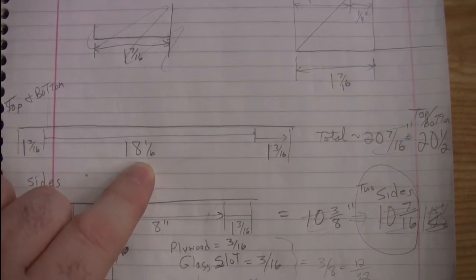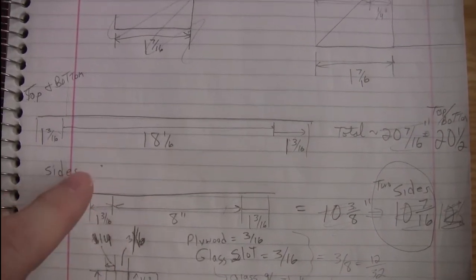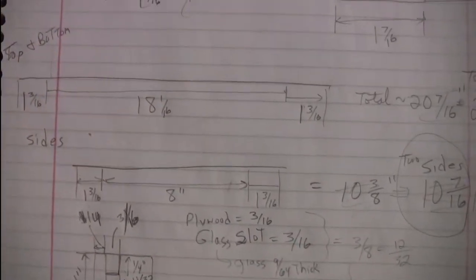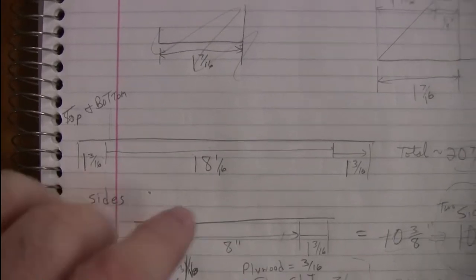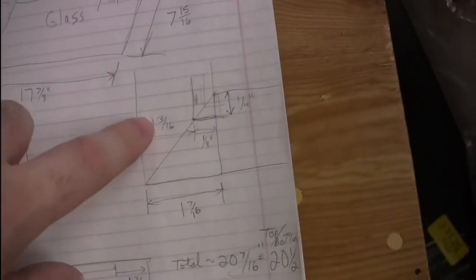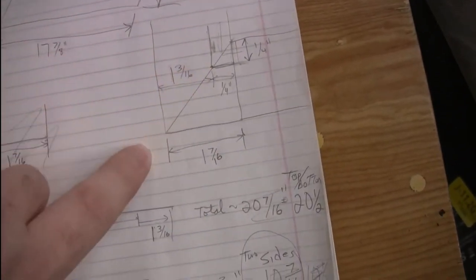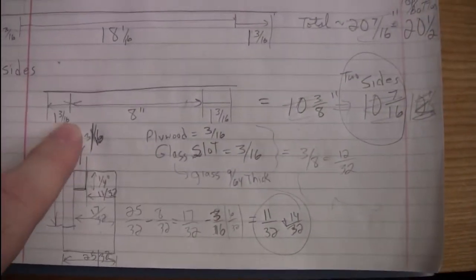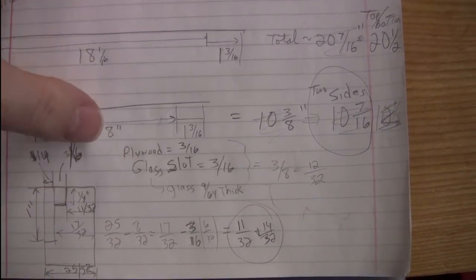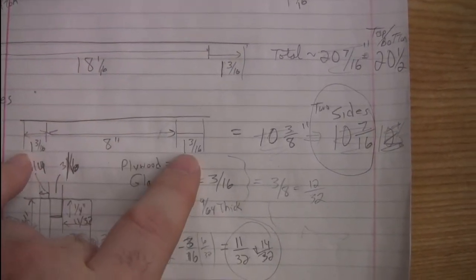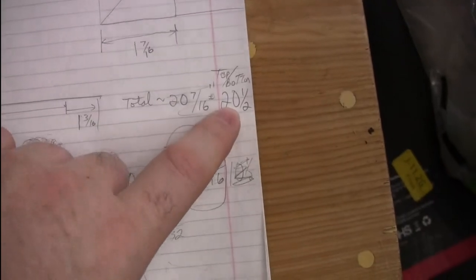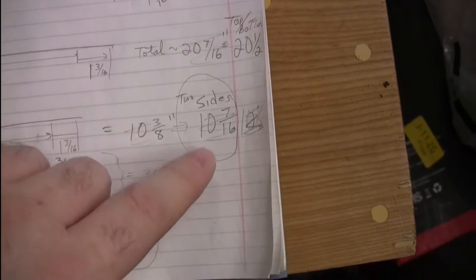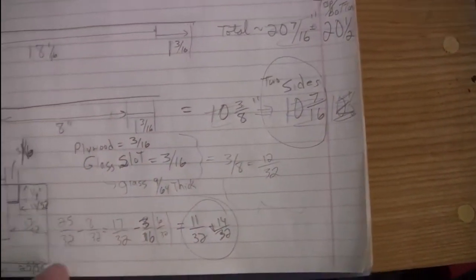And then this was how long do we want. We wanted a sixteenth of an inch space. I know that says one sixth, but that's supposed to be sixteenth. And then one and three sixteenths on each end for this section beyond the inset. And then the sides were eight inches, we added a sixteenth of an inch, and then one and thirteen sixteenths. So it ends up being twenty and a half inches for the full length corner to corner on the top, and ten and seven sixteenths for the sides.